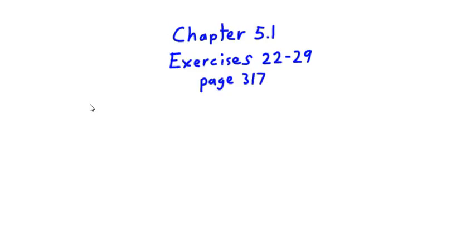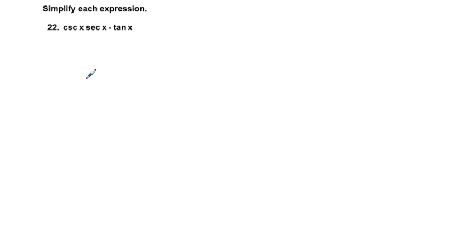Chapter 5.1, Exercises 22-29. This is a section of the book that has to do with trigonometric identities, and we're going to use trigonometric identities to simplify each expression. We go to our first odd number problem in this set, which is 23.